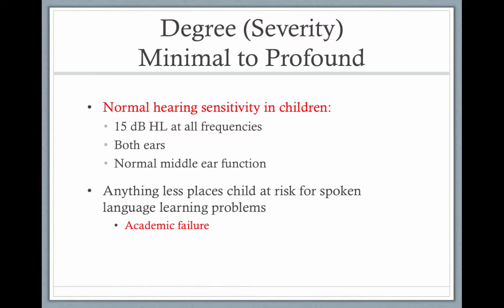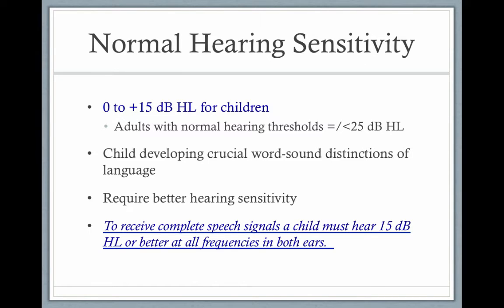Normal hearing sensitivity for children needs to be better than 15 dB HL at all frequencies in both ears with normal middle ear function. Anything less places a child at risk for spoken language learning problems and academic failure. We have stricter criteria for infants and children because they are learning language, so for an adult we might consider 20 to 25 dB normal, but for a child they require super hearing sensitivity to learn language.